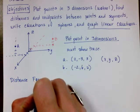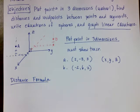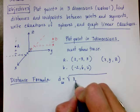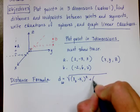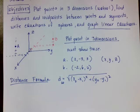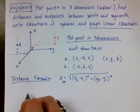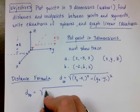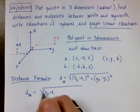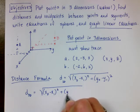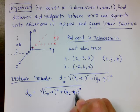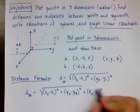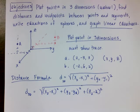Now let's start doing other things in three dimensions — first let's talk about our distance formula. In two dimensions the distance formula is the square root of (x₂ − x₁)² + (y₂ − y₁)². In three dimensions it's really not that much different — it's the square root of (x₂ − x₁)² + (y₂ − y₁)² + (z₂ − z₁)². I just have to add that third variable.